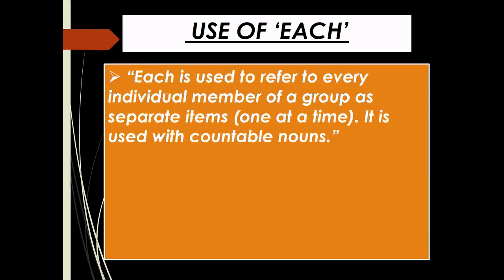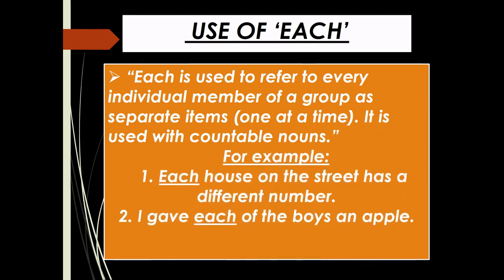Use of 'each': Each is used to refer to every individual member of a group as separate items, meaning one at a time. It is used with countable nouns. For example: 'Each house on the street has a different number.' Second: 'I gave each of the boys an apple.' Here, 'each' refers to separate persons or things in a group of two or more.